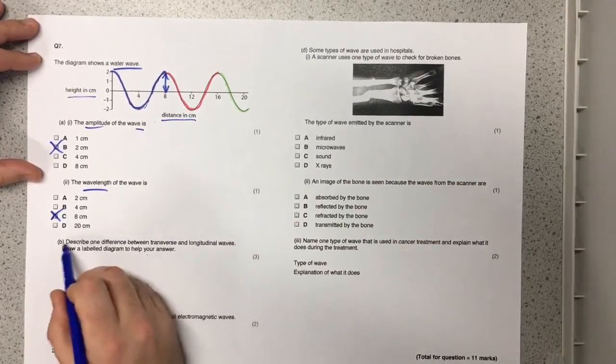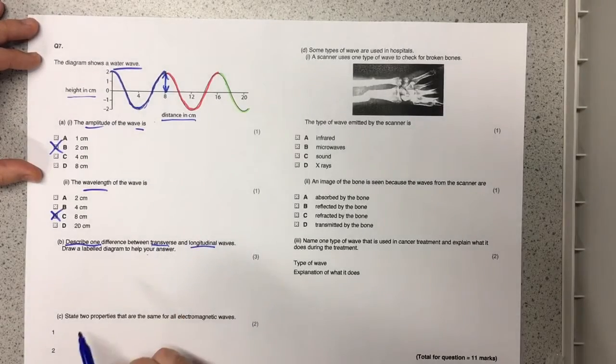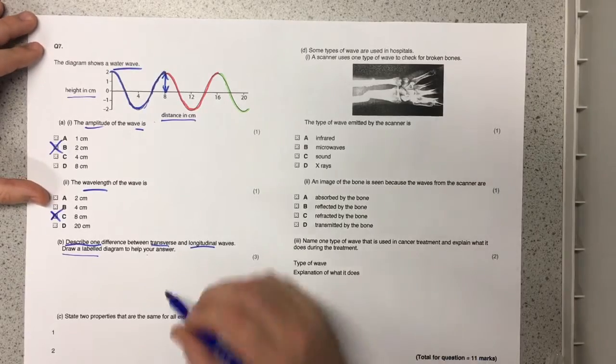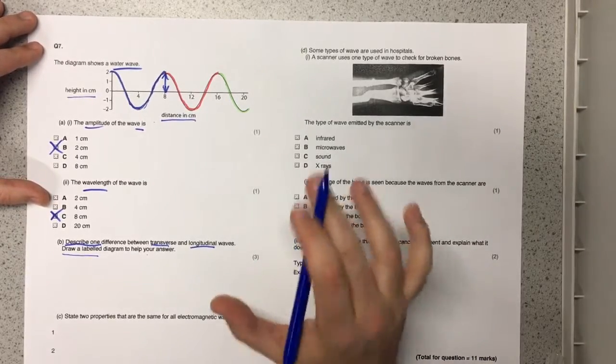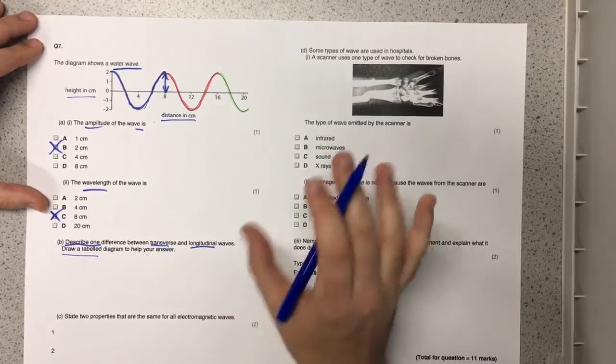The next question says describe one difference between transverse and longitudinal waves and draw a labeled diagram to help you answer. So whenever it says to draw a labeled diagram you must do it because it's much more likely you're going to get the marks. Good labeled diagrams get the marks easily.